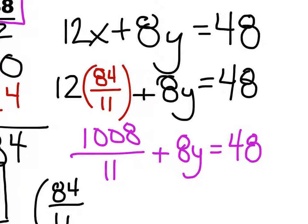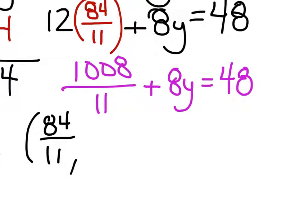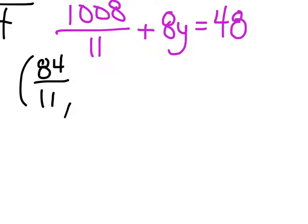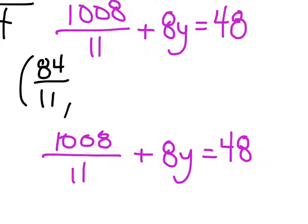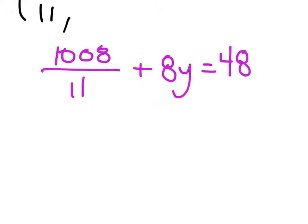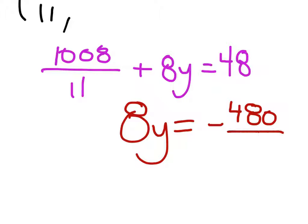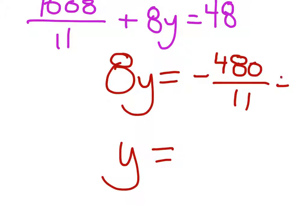So let's look. We've got 1,008 elevenths plus 8Y equals 48. What we really need is for 48 to have a common denominator of 11. So let's do 48 times 11, which is 528. If you subtract the 1,008 over 11, whichever method you choose, you're going to end up with 8Y equals 48 minus 1,008 over 11. Find your common denominators — you're going to get negative 480 over 11. So take negative 480 over 11 and divide by 8, which gives you negative 480 over 88. Simplify it.